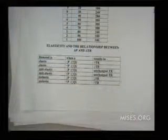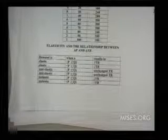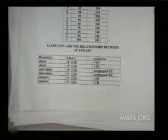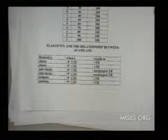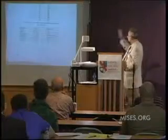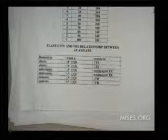On the other hand, if you raise the price in that elastic area — between $6 and $10 — your total revenue falls. If you're in a unit elastic area, between $5 and $6, notice what happens: even though you raise your price from $5 to $6, people buy less but your total revenue is unchanged. The percent change in price is exactly equal to the percent change in quantity — they offset one another, so there's no effect on total revenue.